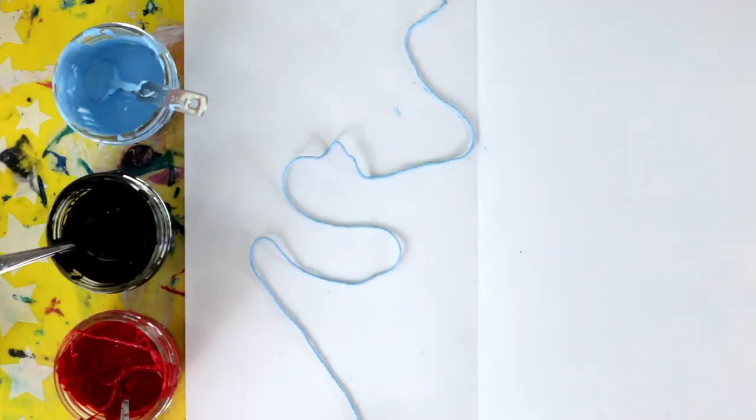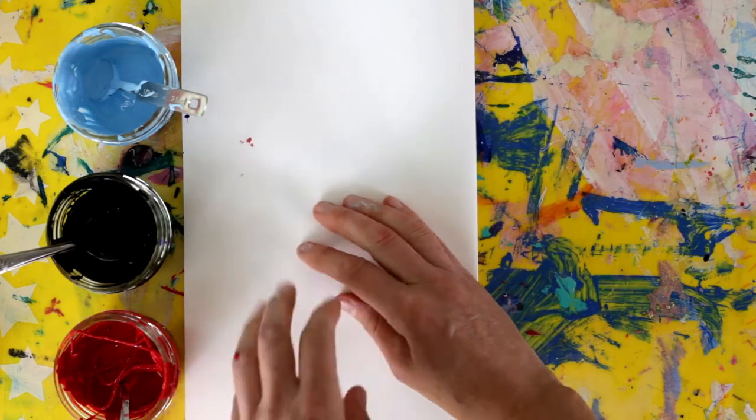Then arrange your paint-colored string on your paper with one end peeking off like that. And then you will fold your paper over.